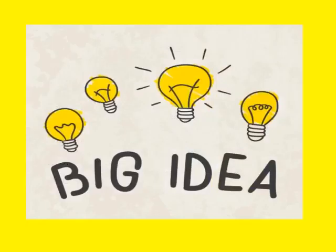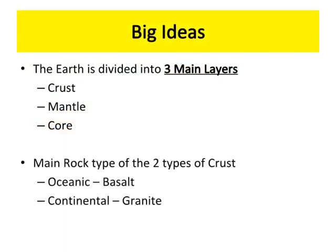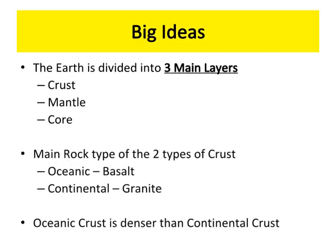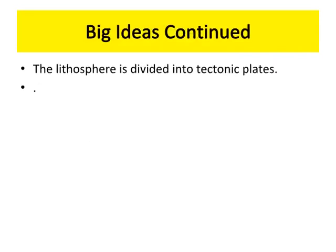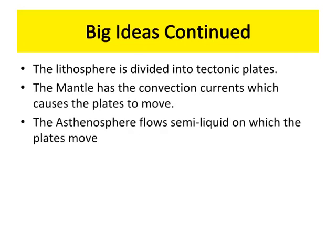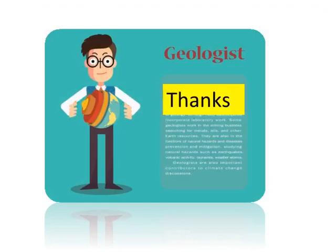Here is the big idea. The Earth is divided into three main layers: crust, mantle, and core. The two types of crust are oceanic and continental — oceanic crust is denser than continental crust. The lithosphere is divided into tectonic plates. The mantle has convection currents which cause the plates to move. The asthenosphere flows semi-liquid, on which the plates move. Temperature, pressure, and density increase as depth increases — this is a direct relationship. I hope you have learned a lot. Thanks for watching!